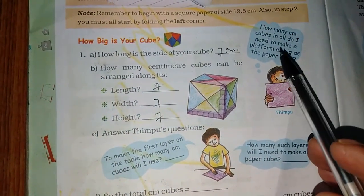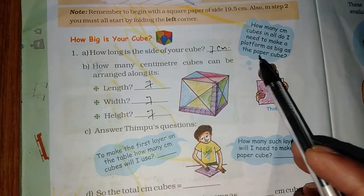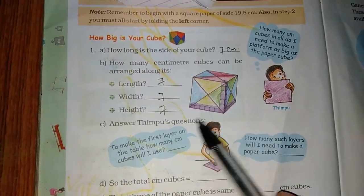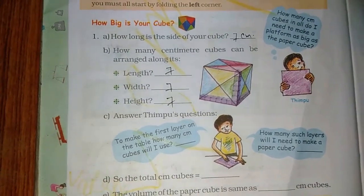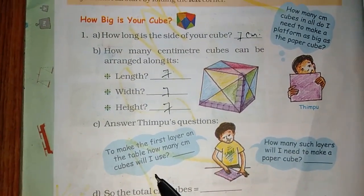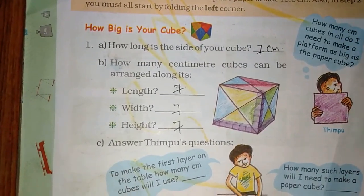Now let's see, how many centimeter cubes in all do I need to make a layer as big as the paper cube? To make the first layer on the table, how many centimeter cubes will I use?